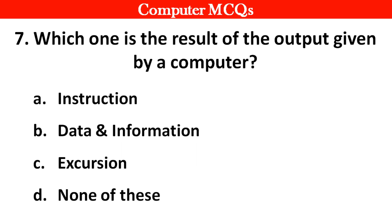Which one is the result of the output given by a computer? Option A instructions, B data and information, C excursions, D none of these. Right answer is option B, data and information.